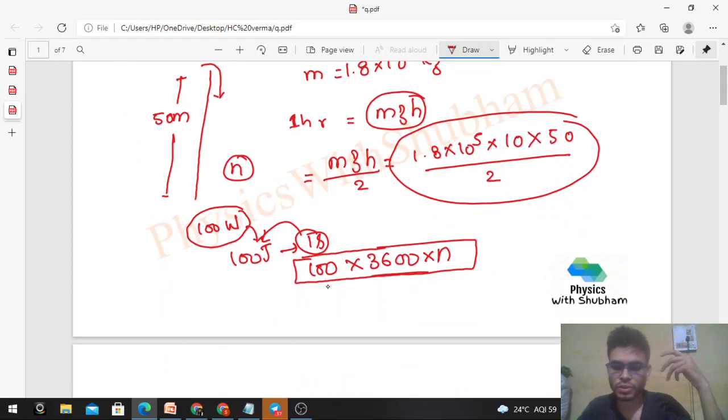Just equate the two. So if we equate them, from here n will be how much? Look, 1.8 × 10⁵ × 10 × 50 divided by 2, and divide by 100 × 3600.